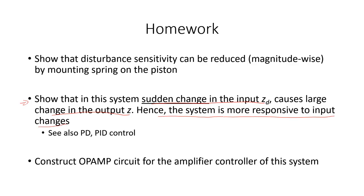This is only one aspect of the amplifier controller introducing the derivative gain — the D gain — due to the term one over omega D. Again, the details will be covered in the control systems course. At this stage it will be helpful for you to explore the different types of basic control schemes such as proportional-derivative (PD) and proportional-integral-derivative (PID) control on your own. You are also required to show that the disturbance sensitivity of the system can be reduced by mounting a spring on the piston.